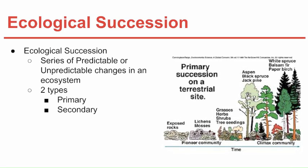Secondary succession is when there is already a healthy ecosystem and a drastic change occurs. For example, if you're in a forest and there's a forest fire, the ecosystem's reaction and the changes that occur to that forest after the wildfire are known as secondary succession. It refers to changes that have occurred to an environment that was already home to other species.